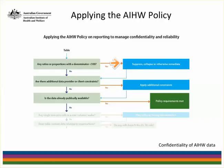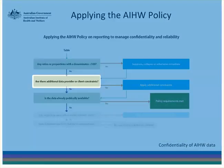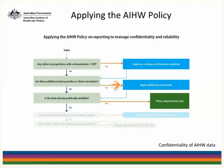The second question is whether there are any additional data provider or client constraints. Data providers can specify at the time of provision any additional constraints beyond the AIHW's confidentiality policy that they would like applied to any data released, to ensure that they too meet their legal obligations. If any such constraints exist, we apply them to the table at this point.